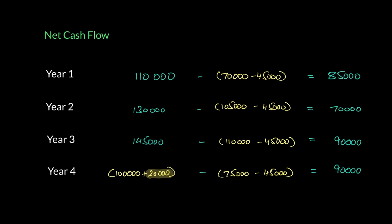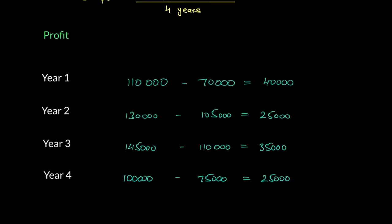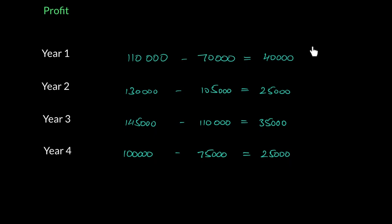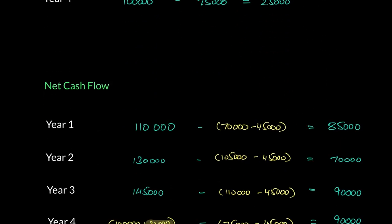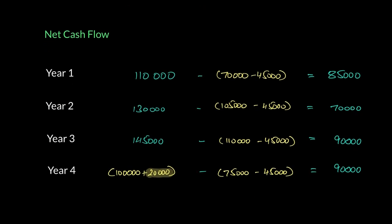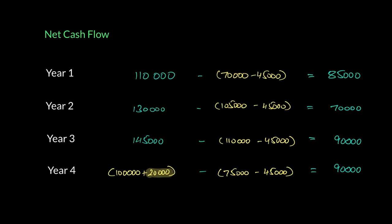So if you guys just compare these two, that's your profit table. That's your profit figures. And this is your net cash flow figure. So what we can say is if I can write this down in an equation, we can use this equation: net cash flow is equal to profit. If you've already calculated that you will add back depreciation because if you remove depreciation, that will increase your net cash flow and you'll add scrap, which was not included in profit, but which should be a part of your net cash flow.